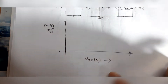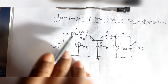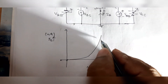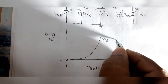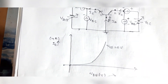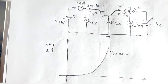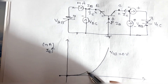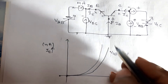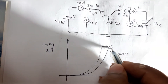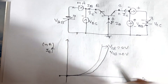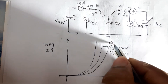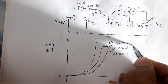Keeping emitter current IE in milliamperes along the Y-axis and input voltage VBE in volts along the X-axis: when VCB equals 0, plot VBE against IE to get a curve. When VCB increases, the emitter current also increases, giving a second curve for VCB equal to 2 volts, and another curve for VCB equal to 4 volts.